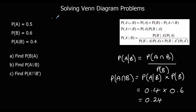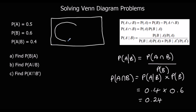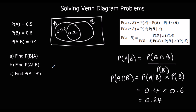The middle bit is 0.24. P(A) is 0.5; we've already got 0.24, so we need another 0.26. P(B) is 0.6; we've already got 0.24, so we need another 0.36. Everything inside the circles adds up to 0.86, which means the outside is 0.14.